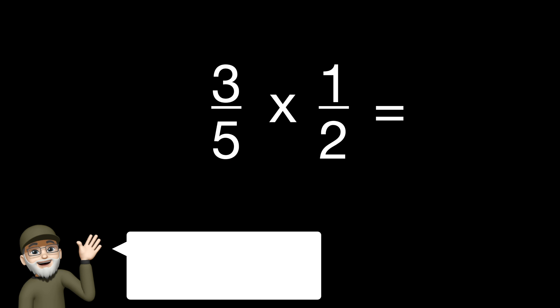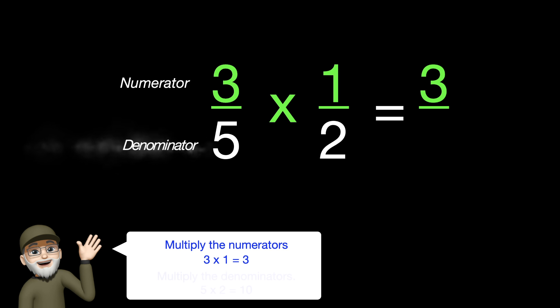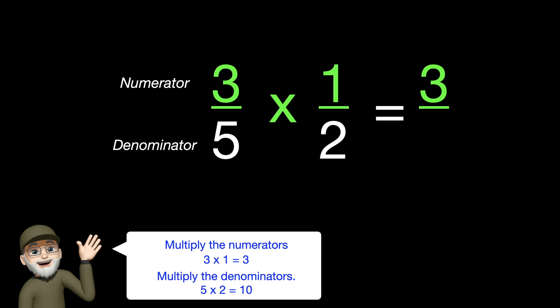Next, we multiply. We multiply the numerator on top. 3 times 1 is 3. And last, we multiply the denominator on the bottom. 5 times 2 is 10. And our final answer is 3 tenths.